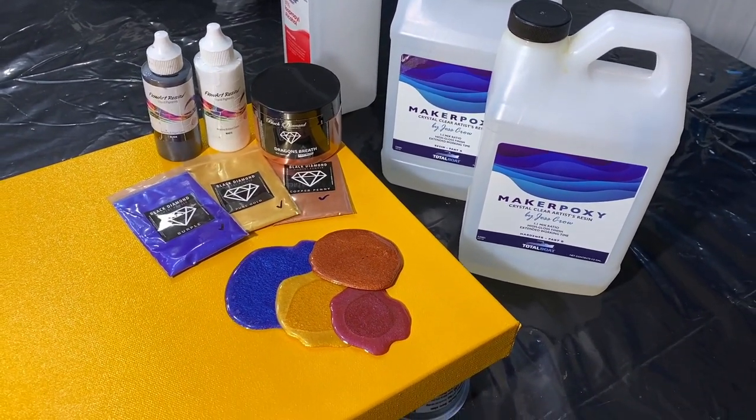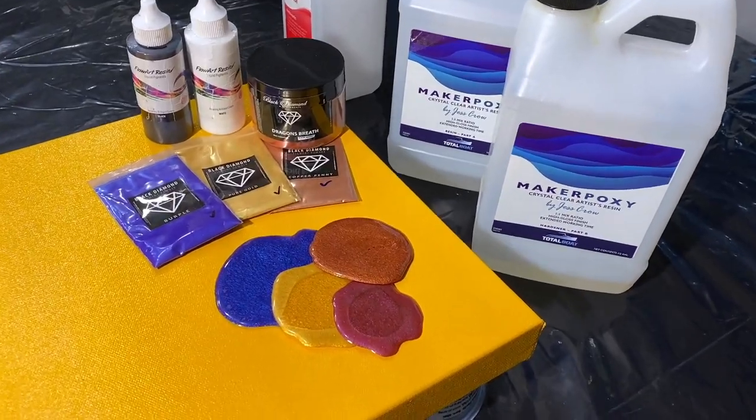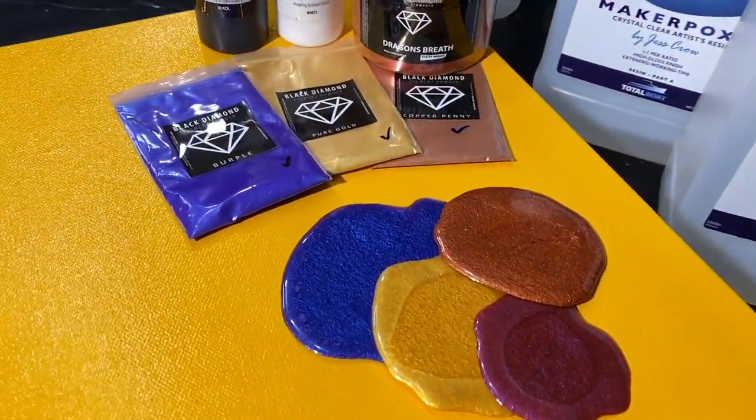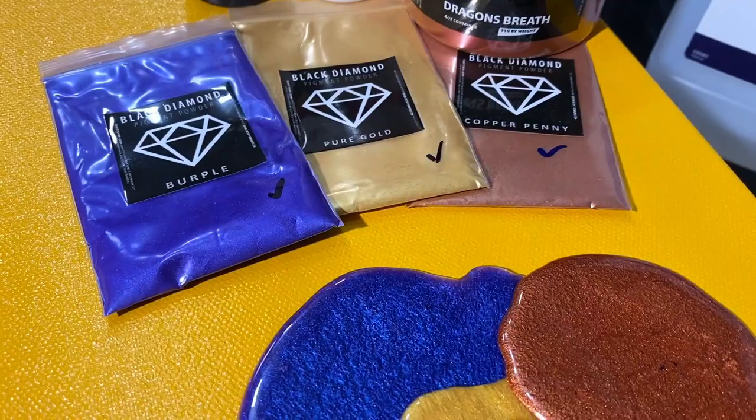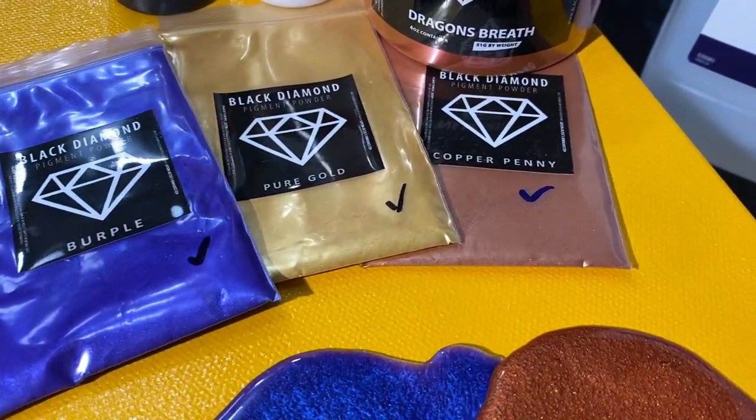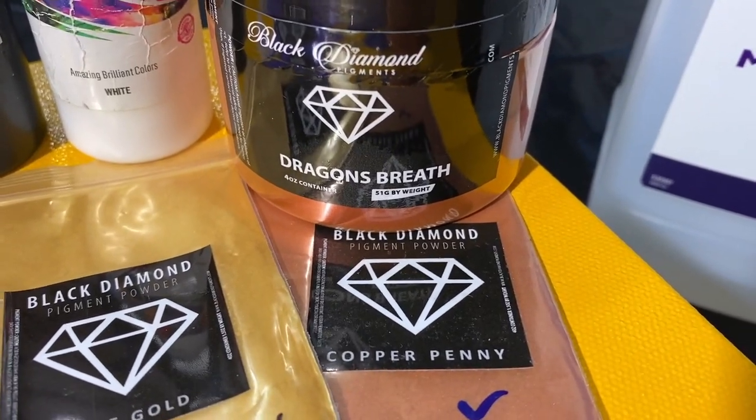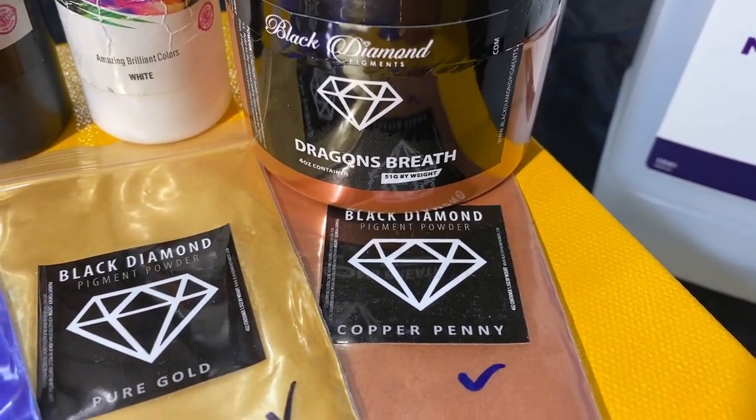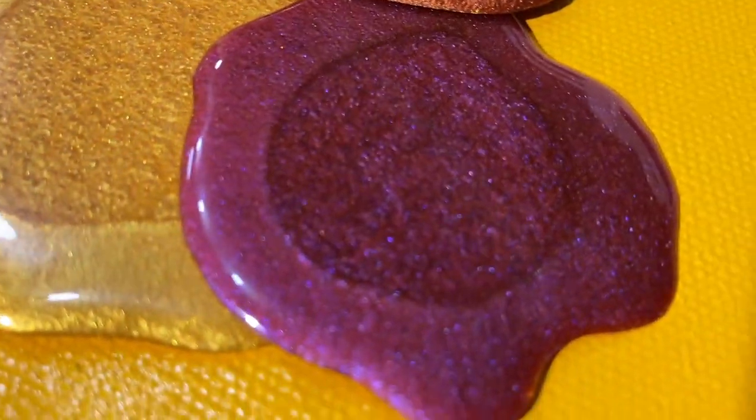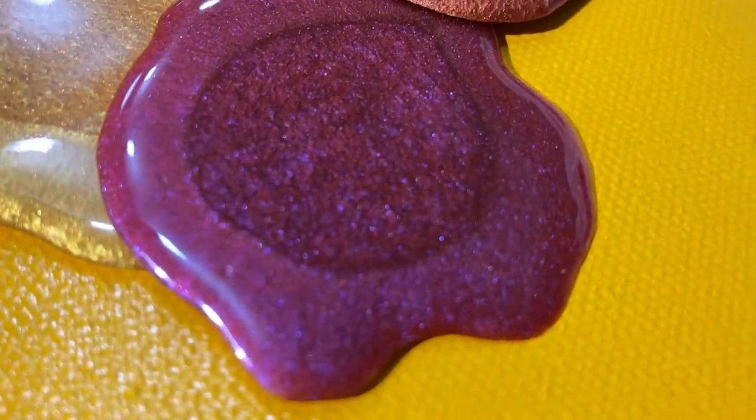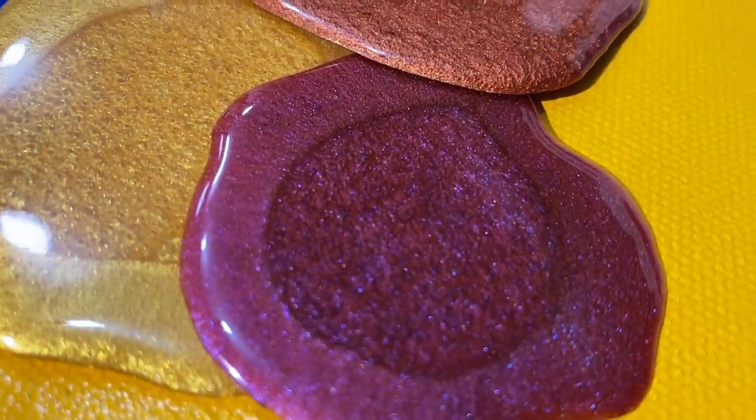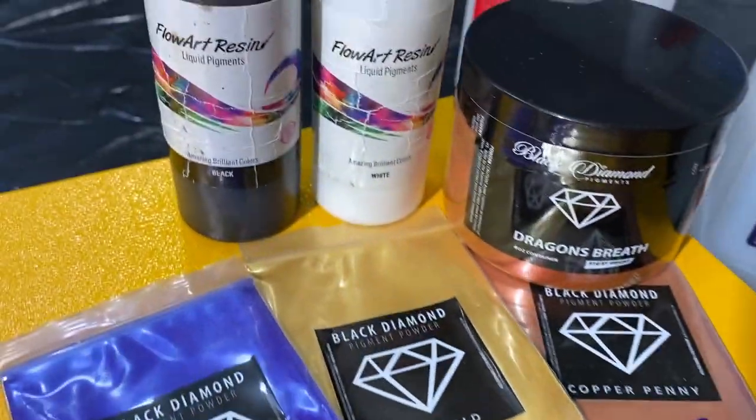This is Janet. I'm going to be showing you a couple of techniques. I'll be using some Black Diamond pigments. I've got Burple, Pure Gold, Copper Penny, and a new one from Black Diamond called Dragon's Breath. I'm excited to test this one out. Here's my little test puddle. It's got some nice color shift to it, so it's pretty cool. Looking forward to playing with that.